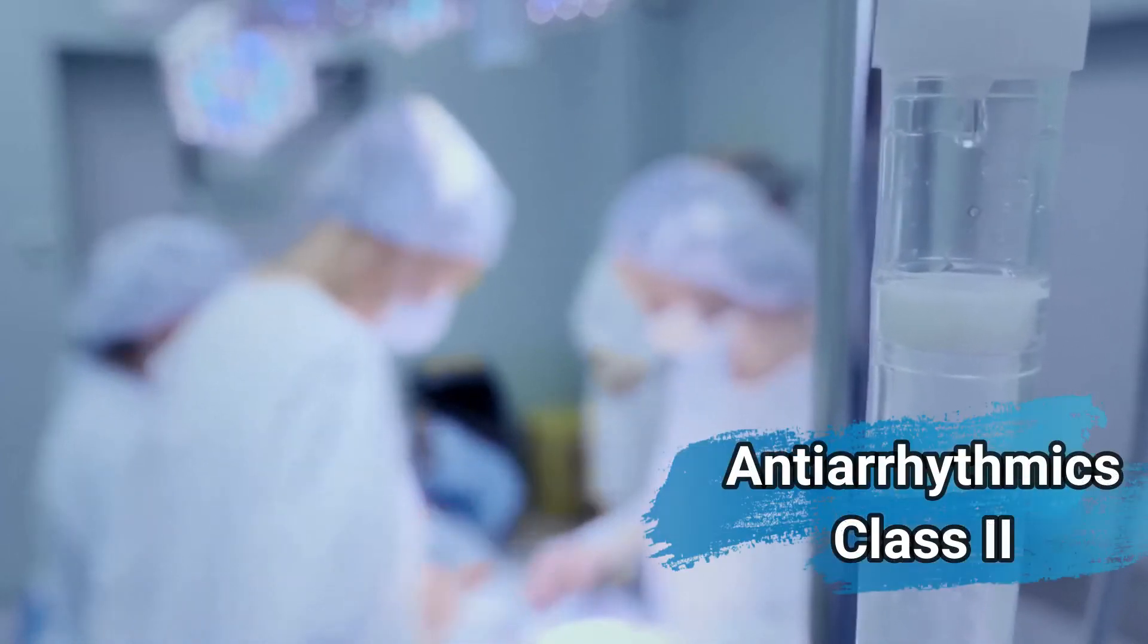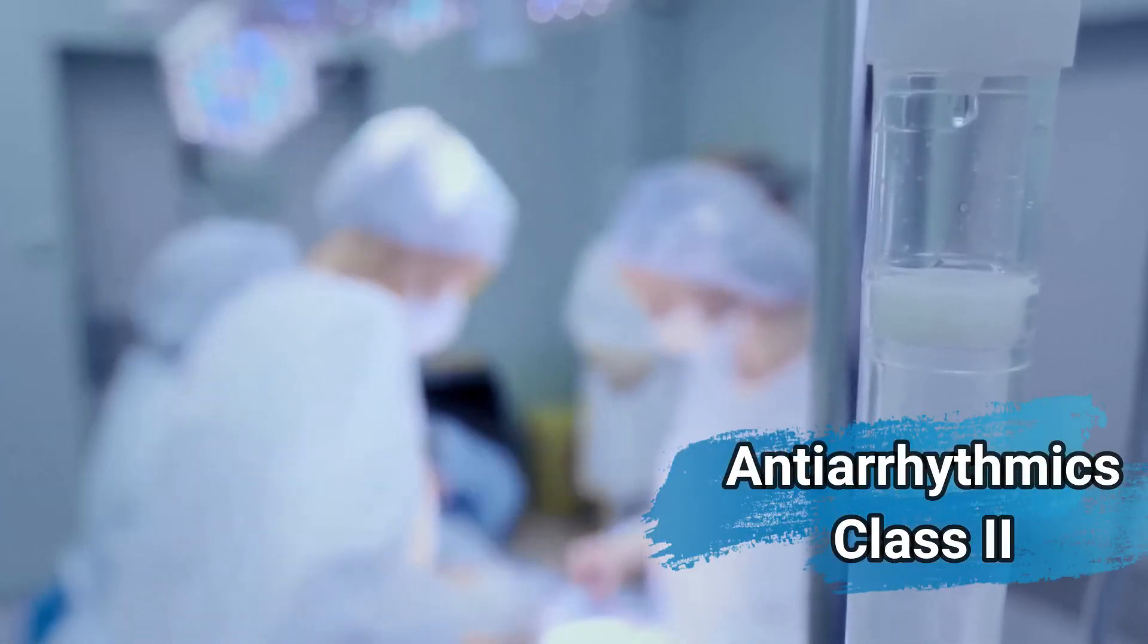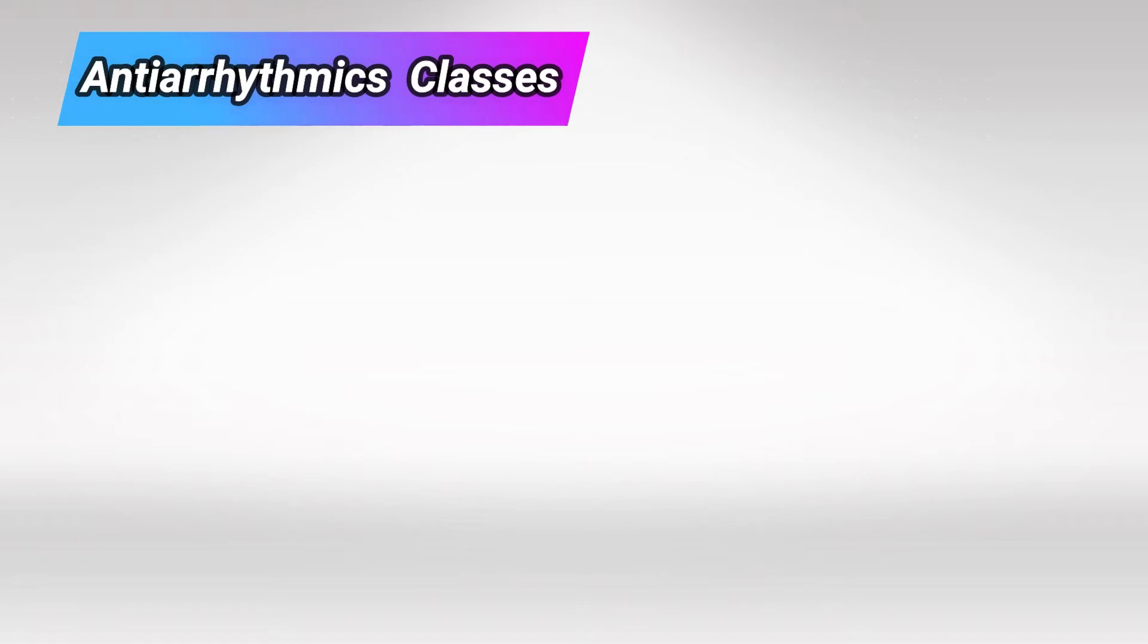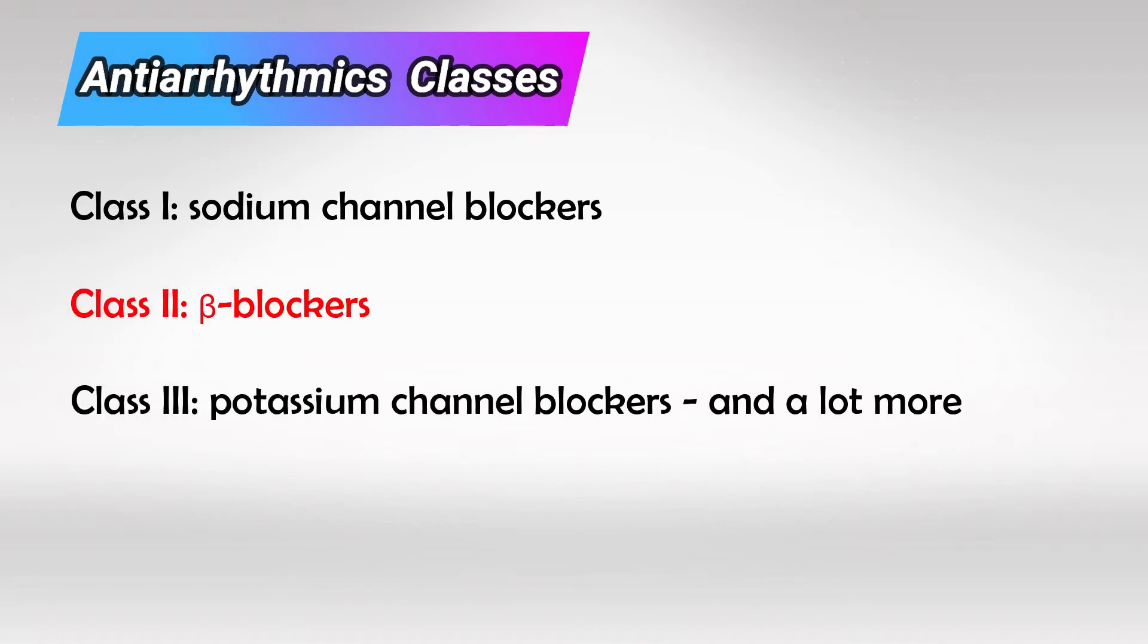Welcome back. In this video, we'll talk about the second class of antiarrhythmic drugs. We have four main classes: Class 1, 2, 3, and 4, classified according to the channels they block. Class 1 is a sodium blocker, Class 2 (the topic of this video) is a beta blocker, Class 3 is an everything blocker, and Class 4 is a calcium channel blocker.